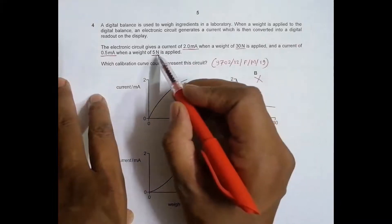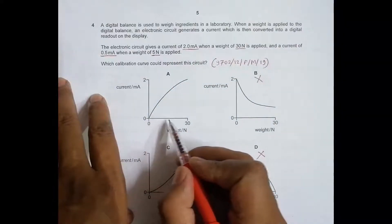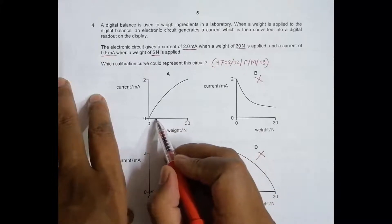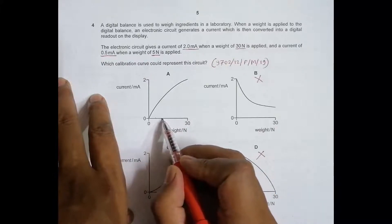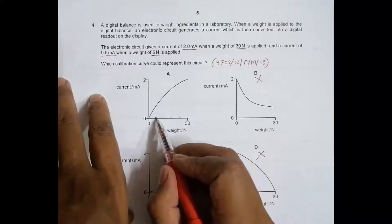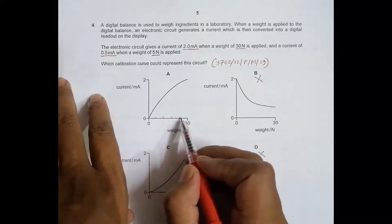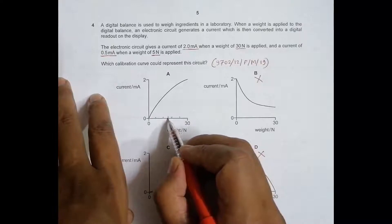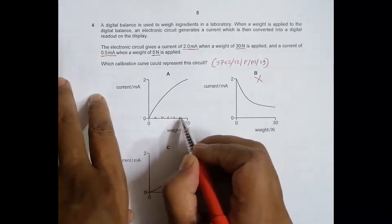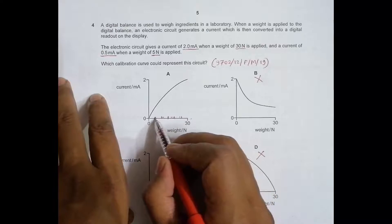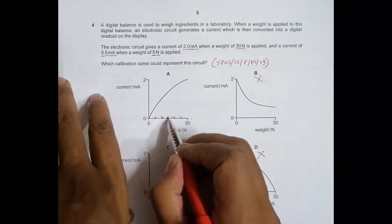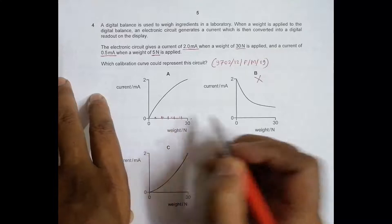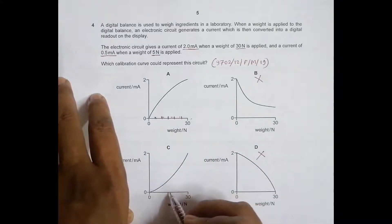Then at 5 Newtons - if I divide the axis into parts, marking 5, 10, 15, 20, 25, and 30. So this should be 15 in the middle, then 5, 10, 15, then 15, 20, 25, and 30.